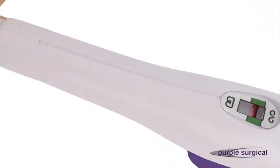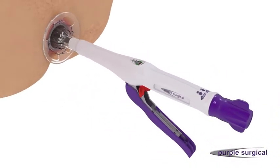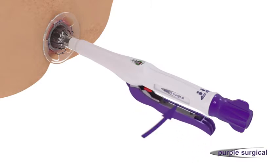Confirm the red line is in the middle of the green bar within the indicator window. Pull the red safety lever back until it seats into the body of the device. The stapler is then fired by squeezing the firing handle firmly in an upward direction.